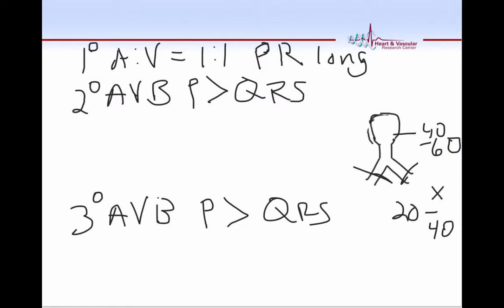The first type we talk about is called Mobitz I second-degree AV block, and that is also called AV Wenckebach. Mobitz I block occurs at the level of the AV node. Therefore, it is usually associated with narrow QRS complexes. And Mobitz I block is known for its progressive PR prolongation until finally one of the P waves doesn't conduct, and then the whole cycle starts over again. The relationship of P waves to QRS in Mobitz I block is variable. You can have five P waves to four QRSs. You can have four to three, three to two, or even two to one.